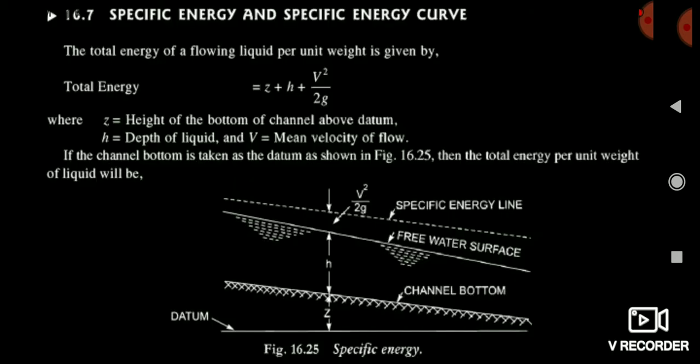Here you can see specific energy. Specific energy is nothing but the total energy. When you add all the energies — all the head losses — head loss due to height, head loss due to depth of liquid, and due to velocity head. If you add all these heads, then you get the specific energy. You can clearly see here: V²/2g plus H plus Z means total height. That is our specific energy.